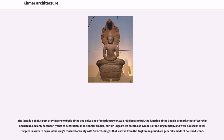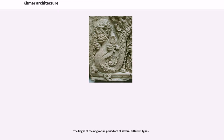The linga is a phallic post or cylinder symbolic of the god Shiva and of creative power. As a religious symbol, the function of the linga is primarily that of worship and ritual, and only secondarily that of decoration. In the Khmer Empire, certain lingas were erected as symbols of the king himself and were housed in royal temples to express the king's consubstantiality with Shiva. The lingas that survived from the Angkorian period are generally made of polished stone, and are of several different types.